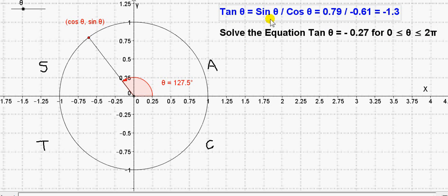We know that the tan of θ is the sine of θ divided by the cos of θ. So we take the y value of a point on the unit circle and divide by the x value for a given value of θ.